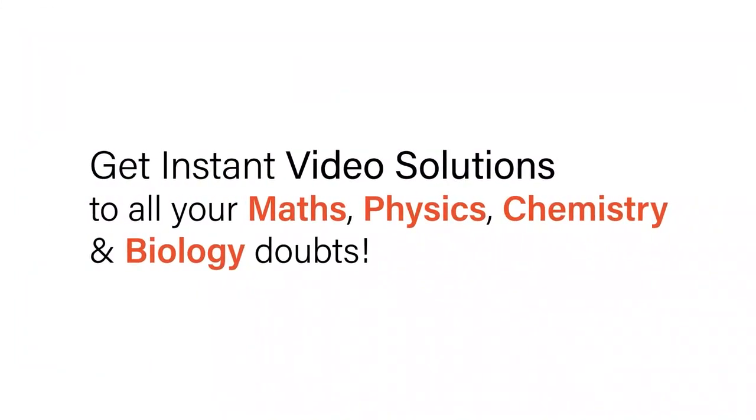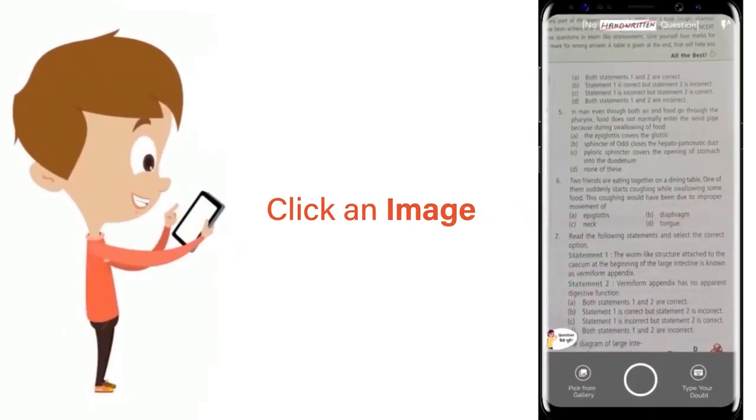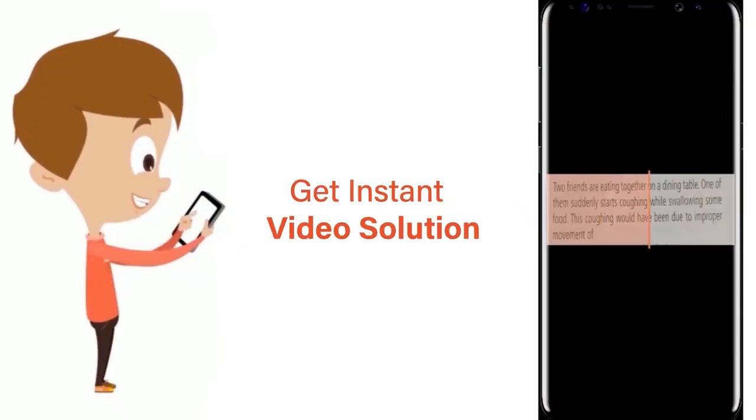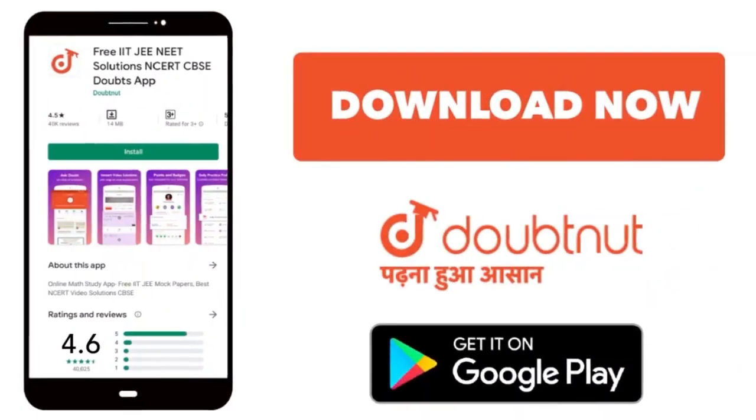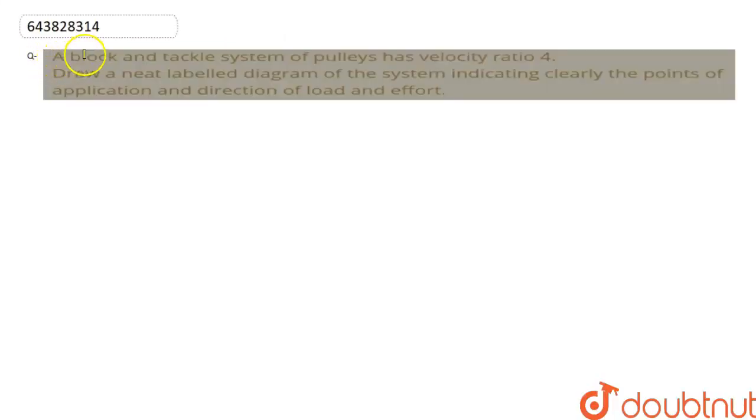With Doubtnut, get instant video solutions to all your maths, physics, chemistry, and biology doubts. Just click the image of the question, crop the question, and get instant video solution. Download Doubtnut app today. So the question is a block and tackle system of pulleys has velocity ratio 4.